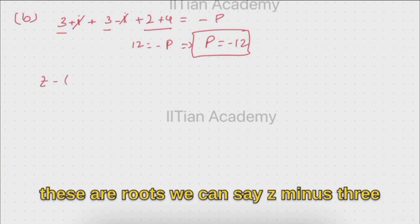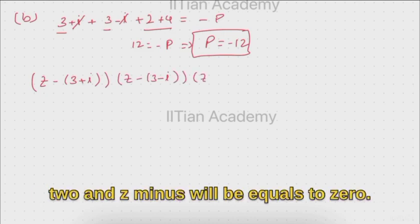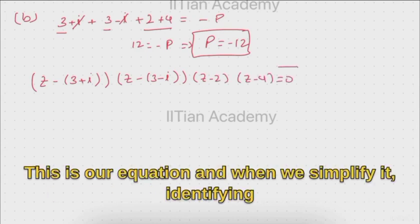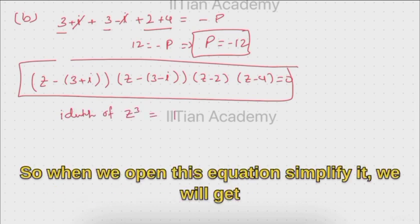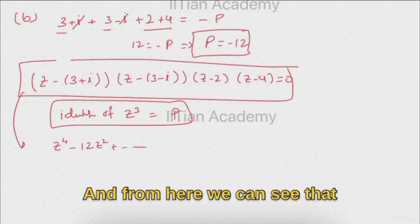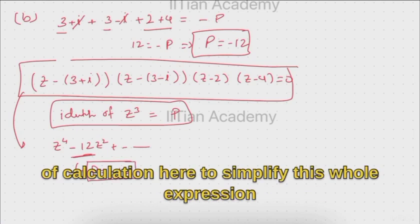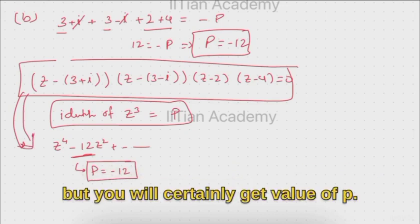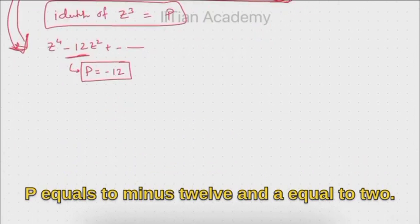Another method is to expand (z minus (3 plus iota))(z minus (3 minus iota))(z minus 2)(z minus 4) equals 0 and identify the coefficient of z cubed. When we simplify this expression we get z to the power 4 minus 12 z and so on, and from here we can see that p equals minus 12. So after some calculation you will certainly get p equals minus 12. Our final answers are p equals minus 12 and a equals 2.